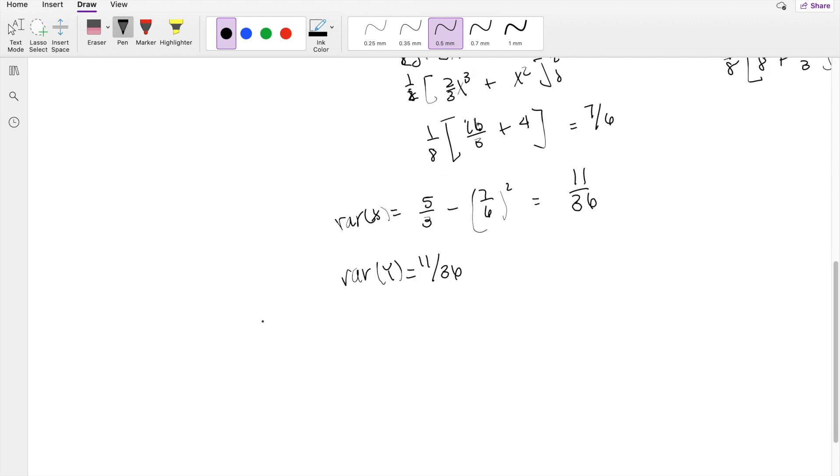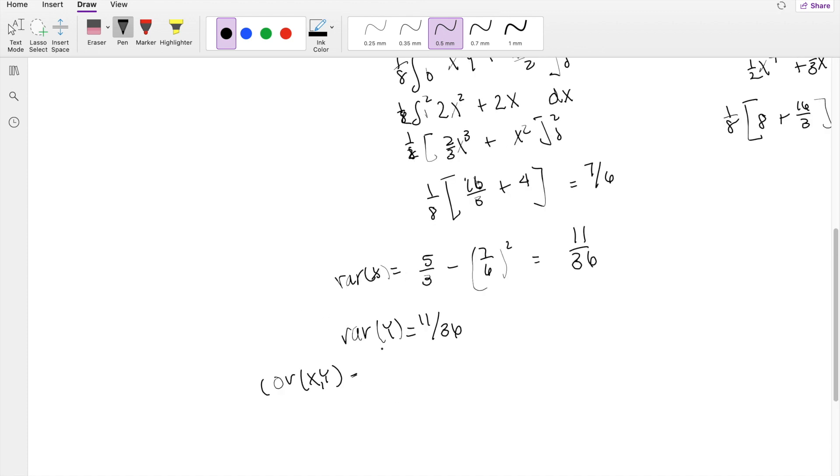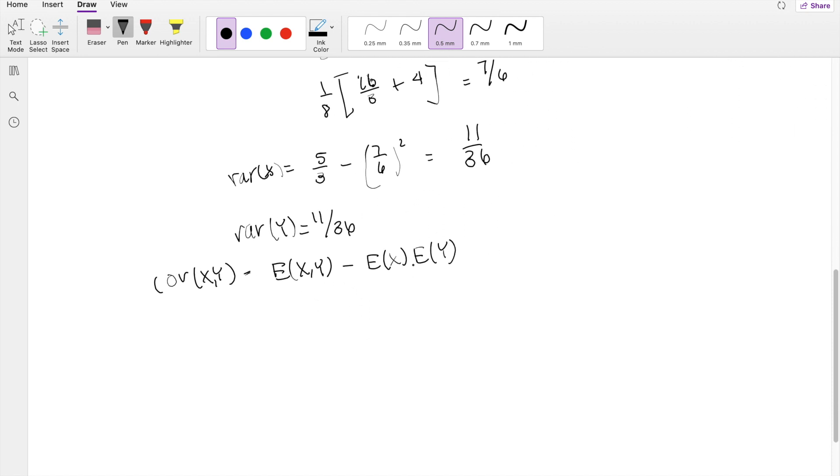Now we have to find the covariance of x and y. The covariance formula is the expectation of xy minus the expectation of x times the expectation of y. We know expectation of x and y, but we need to find the second moment. Again, the limits are the same, 0 to 2, but instead of x or y, we have xy times x plus y over 8 dx dy.